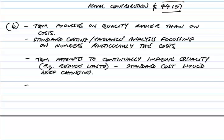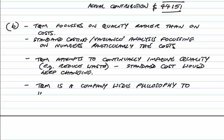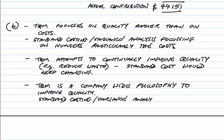With TQM, the whole organisation is trying to improve quality — it's an organisation-wide philosophy. Whereas with standard costing and variance analysis, we're looking very much at each separate area: we've saved on materials, or we've overspent on labour, and so on. TQM is a company-wide philosophy to improve quality, whereas standard costing and variance analysis are looking at each area of the business separately.